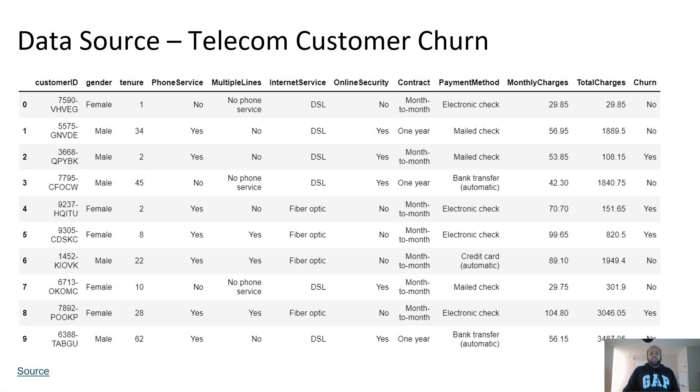So here's the data set I'm using for this demo today. It's a Telecom customer churn data set from Kaggle. The link is down here in presentation. And basically, each row is a customer and you can see various attributes of customer and the last column here represents whether that customer has left next month or next next month. I don't know the time period here, but basically says yes or no.